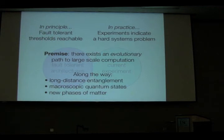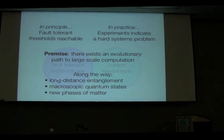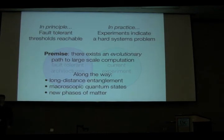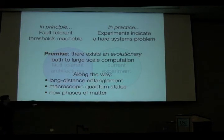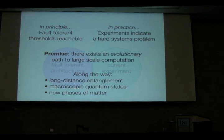Along the way of this evolutionary path, there are a few things we hope to accomplish that might be less than computation, but still extremely interesting. These include long-distance entanglement — showing loophole-free Bell inequality violations — showing that entanglement is meaningful at macroscopic distances or distances the size of the Earth, and perhaps producing very interesting macroscopic quantum states or new quantum phases of matter.